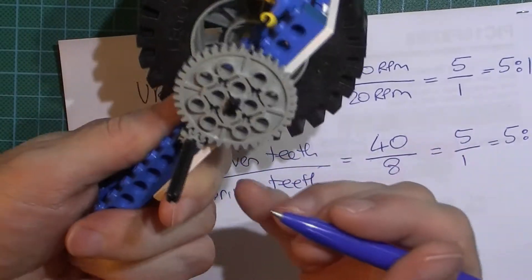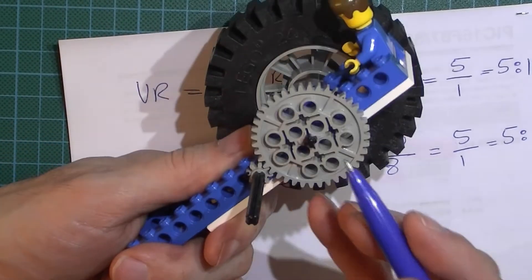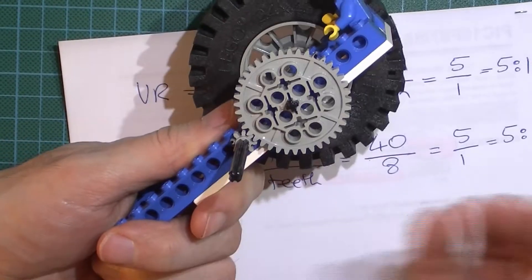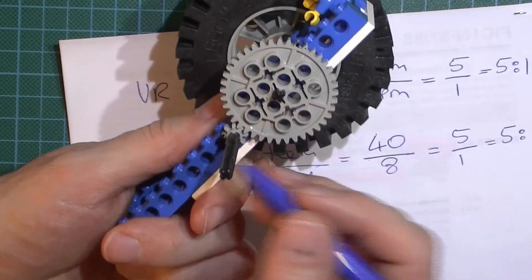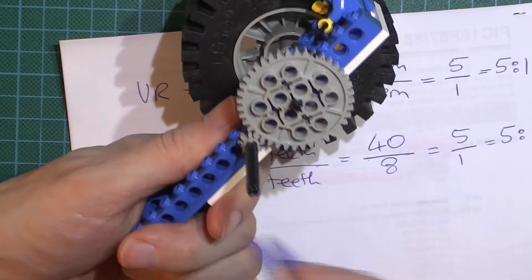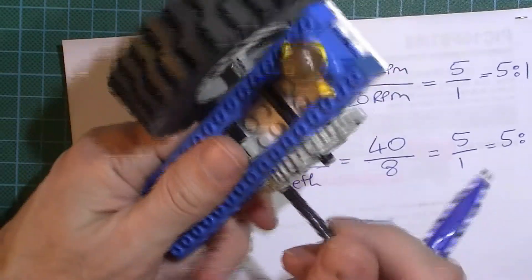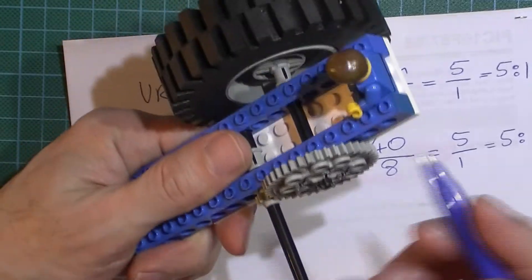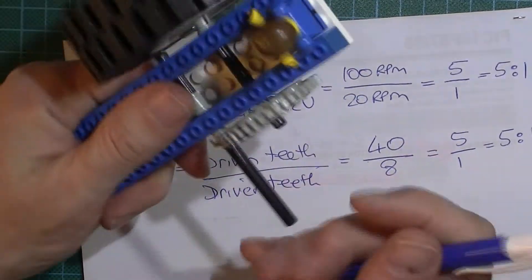Now if you didn't know the number of teeth but you could measure the diameter, that would be equally acceptable. In fact, it doesn't even need to be the diameter—it could be radius and radius, diameter and diameter, it could be the whole circumference of one compared to the whole circumference of the other. It does not matter, so long as you use the same metrics you'll still come out with the same figure of the velocity ratio.